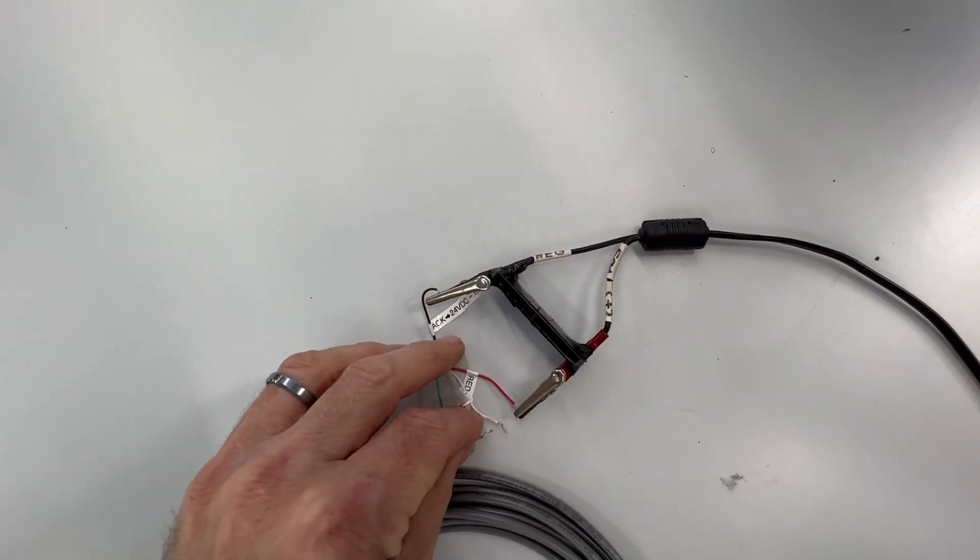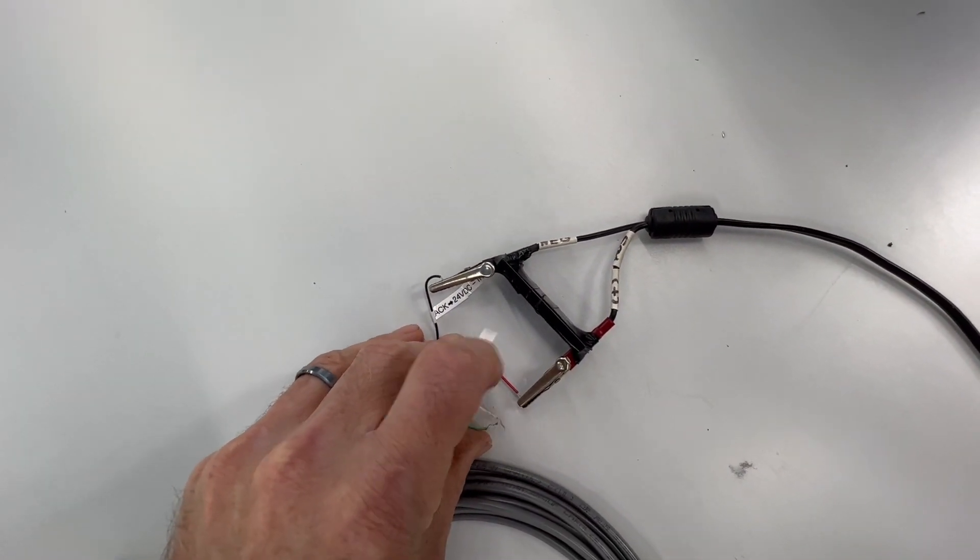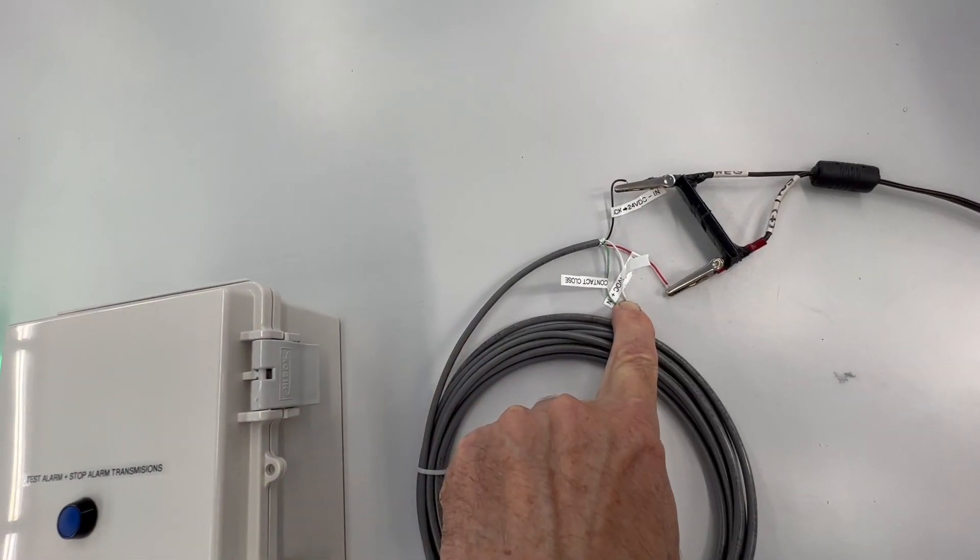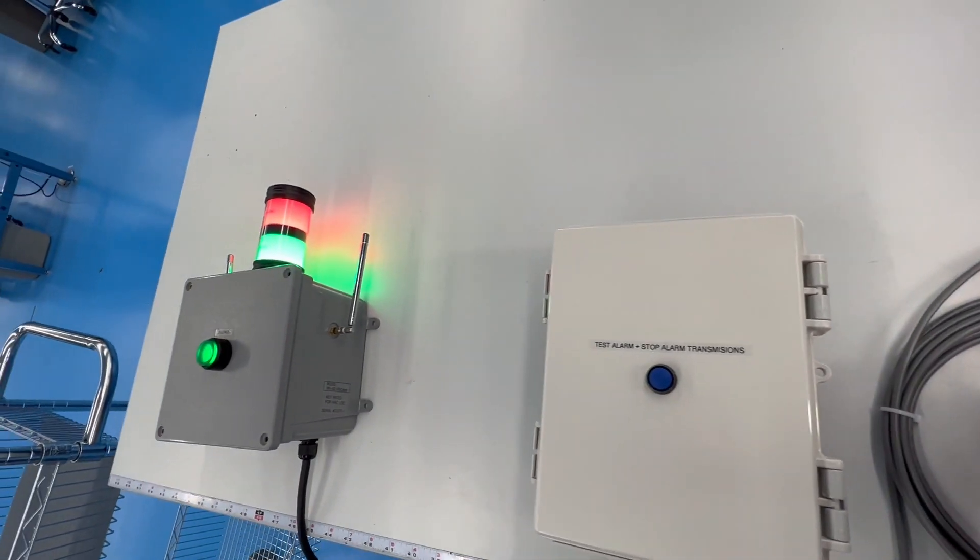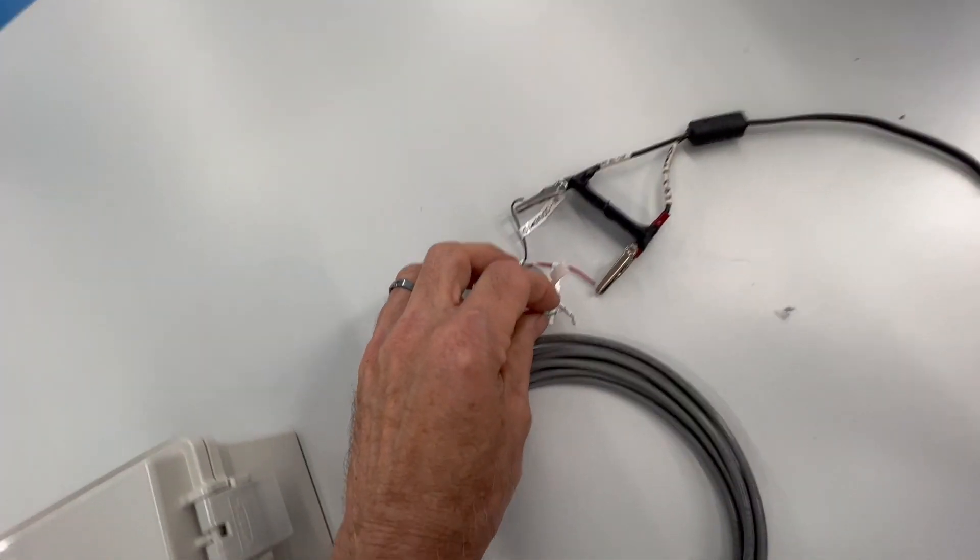This is 24 volts coming in. There's a contact close. There's a two-second delay, so after we break the contact close, it still alarms.